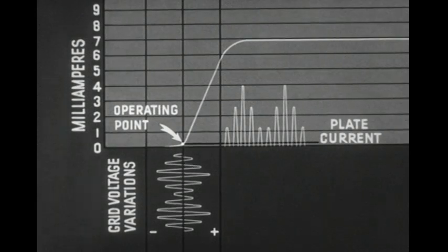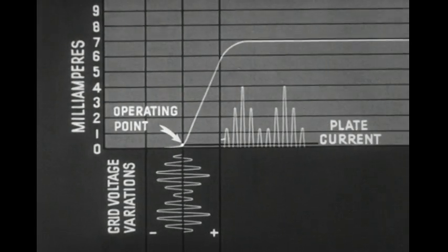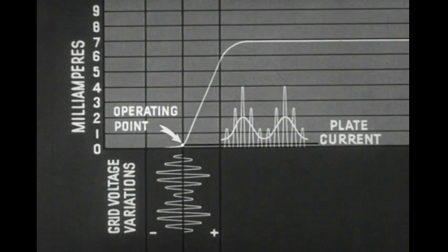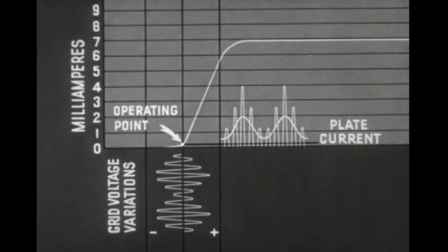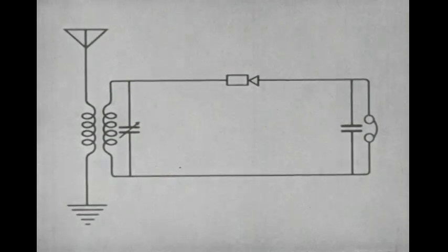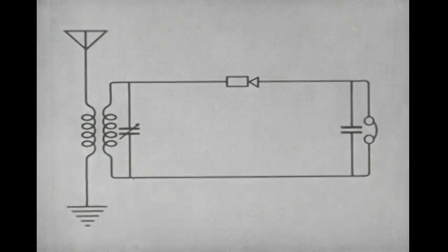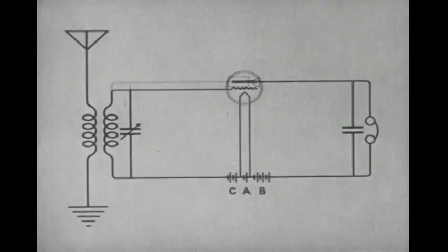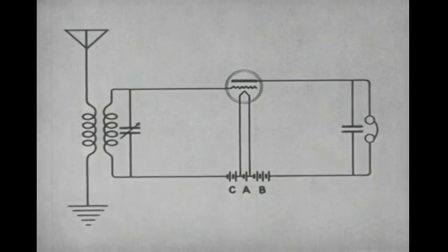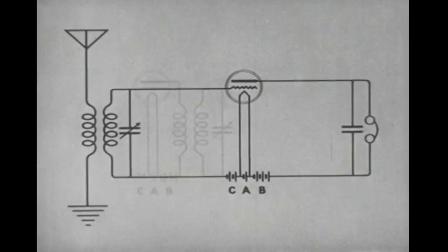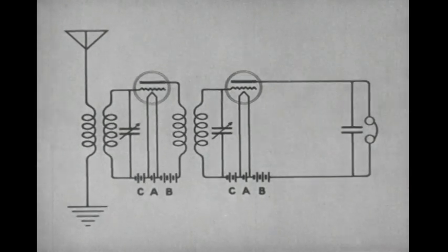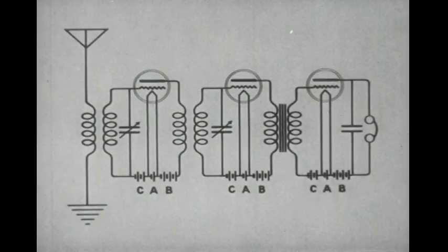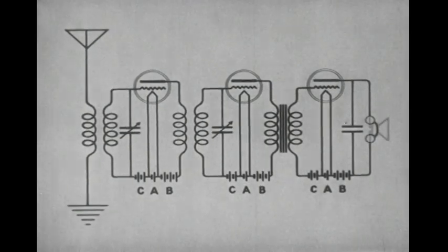The average plate current resulting from the unequal amplification of the positive and negative half-cycles will be a direct current pulsating at audio frequency. Such a current will operate the earphones. Here is a diagram of a simple receiving set using a crystal as a detector. The vacuum tube is more efficient than a crystal because it also acts as an amplifier. A radio-frequency amplifier may be added ahead of the detector, and an audio amplifier after it, allowing use of a loudspeaker instead of headphones.